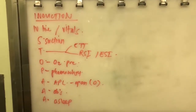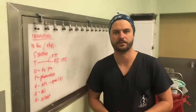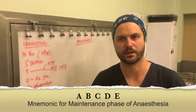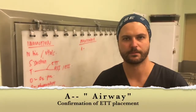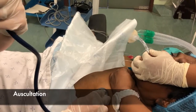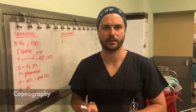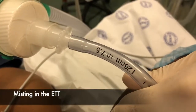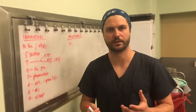That completes our induction phase. We now move on to the maintenance phase of anesthesia. My mnemonic for this is ABCDE, and then we incorporate the triad of anesthesia thereafter. For airway, we want to confirm that our ET tube is in. To confirm: firstly, we auscultate over the thorax and over the stomach to make sure it's not in the stomach and not down one bronchus. We then look at our capnography, which is our most sensitive marker of intubation. We can also look at the ET tube for misting and look for chest rise.